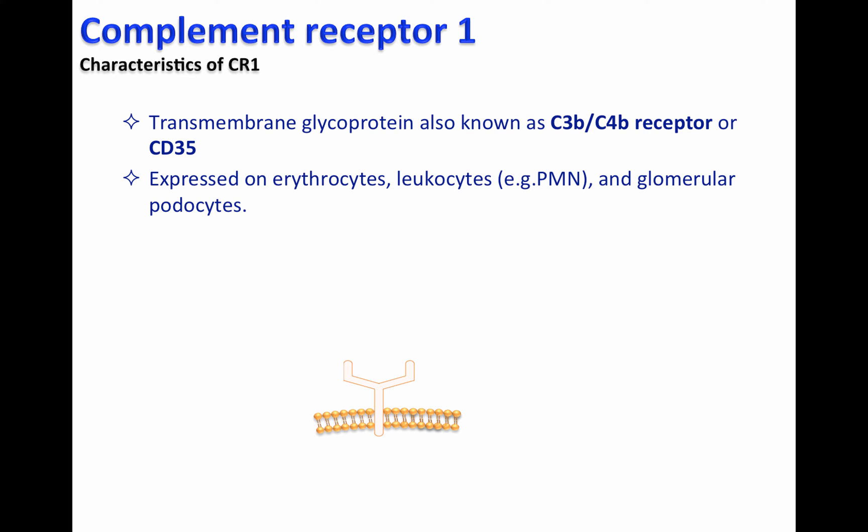CR1 is expressed on erythrocytes, leukocytes such as polymorphonuclear cells, and glomerular podocytes. CR1 plays a fundamental role in removing immune complexes from circulation and during the process of phagocytosis. These functions are covered in other videos.